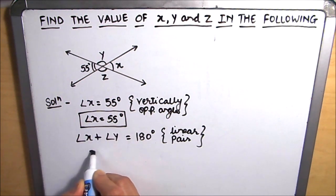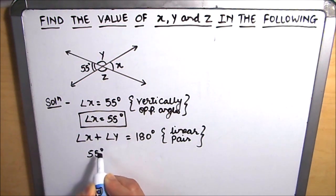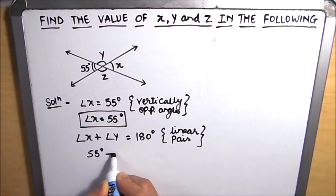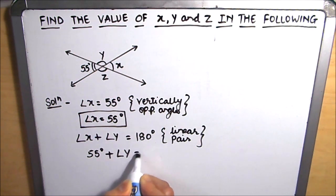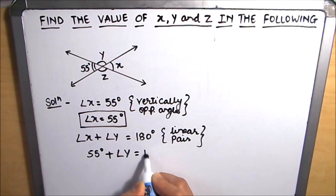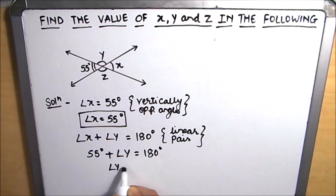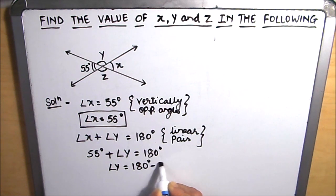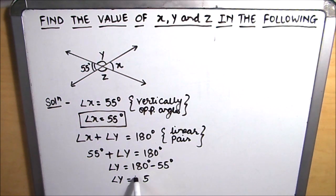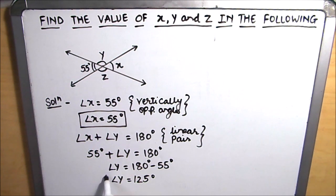Since we know angle x, we put the value of angle x, which is 55 degrees. Angle y is equal to 180 degrees minus 55 degrees. To find the value of angle y, we transpose 55 to the right-hand side, so angle y is equal to 125 degrees.